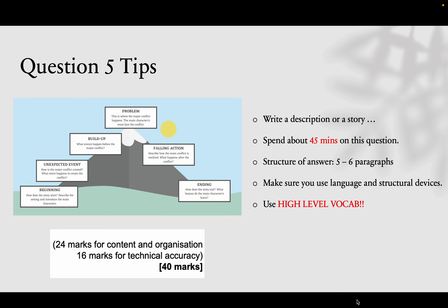There's always a beginning and an ending, with a build up, a problem, and a falling action. The unexpected event is something you can directly link to your photograph. If you look at the photograph and have no ideas, pick out certain features — for example, just an ocean and a sky gives you two things to talk about. You can introduce your own characters and make up whatever you want from that. Always start from the small bits and build up from there. This is 40 marks, so 45 minutes is the perfect time to spend on it.